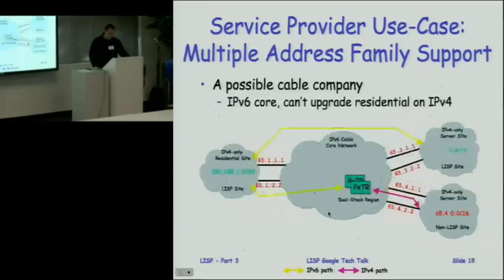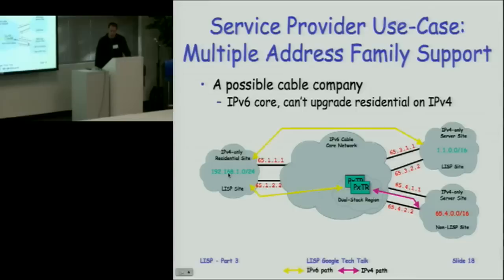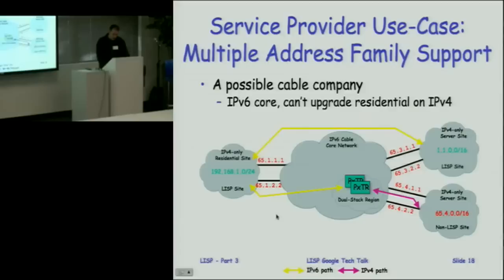The reverse scenario could be a cable company with an IPv6 core that can't upgrade residential sites because they're running set-top boxes with IPv4 and truck rolls are too expensive. If a residential IPv4-only site is running LISP, it can encapsulate IPv4 packets in IPv6 — the only thing the core supports — and get decapsulated at a server with a global IPv4 address. Similarly, a LISP site wanting to talk to a non-LISP site encapsulates IPv4 over IPv6 to a proxy ETR, which decapsulates and forwards natively.